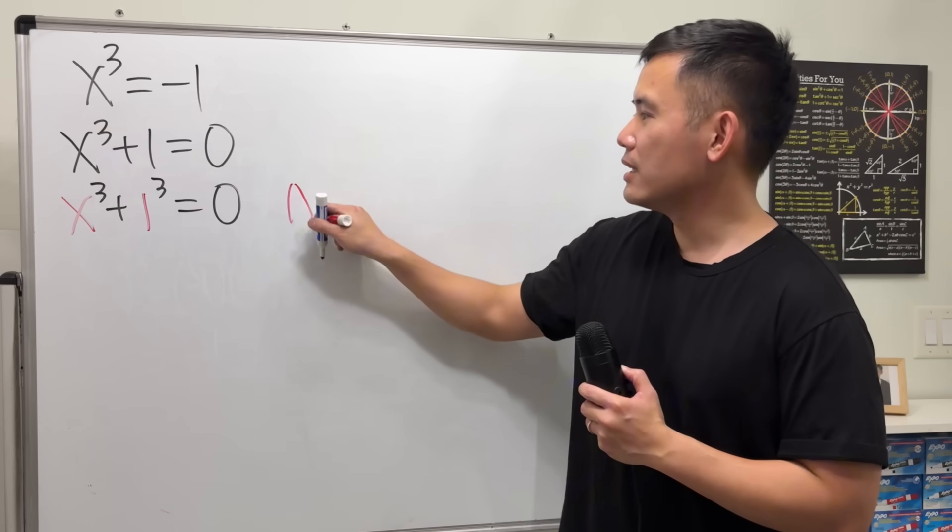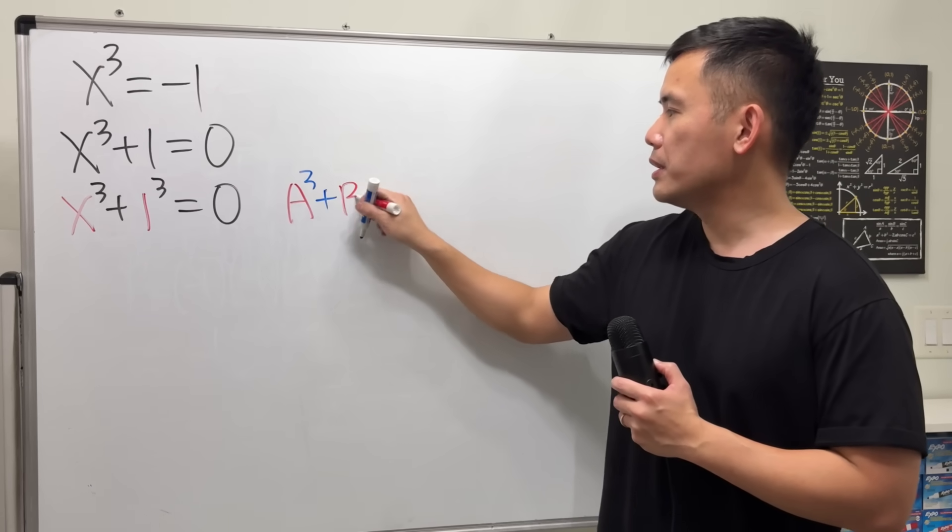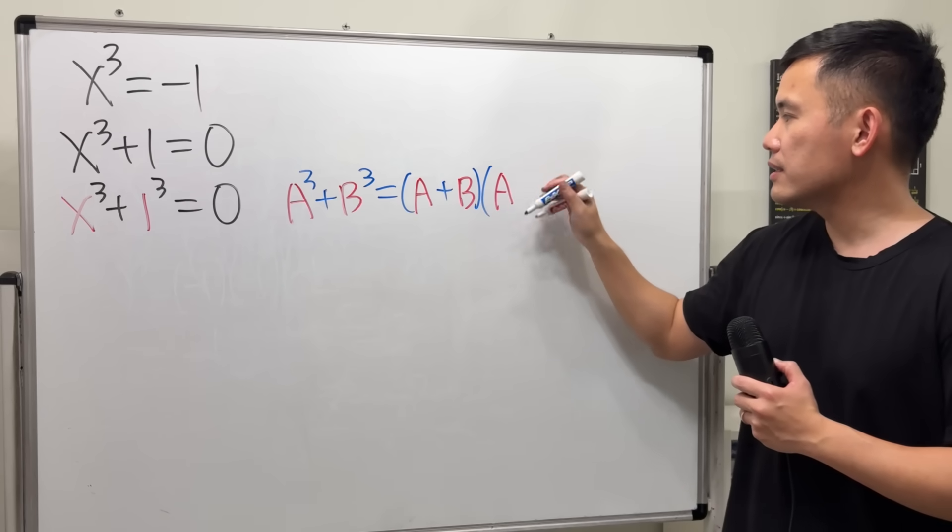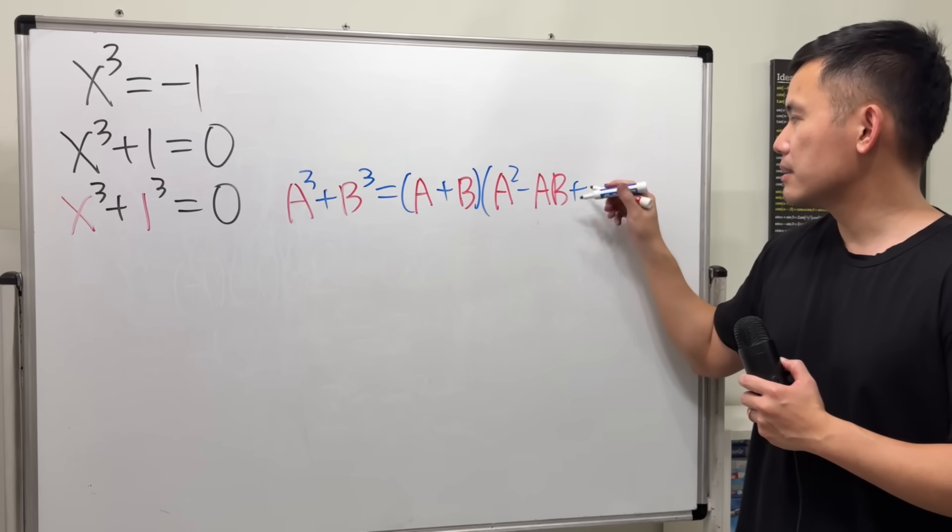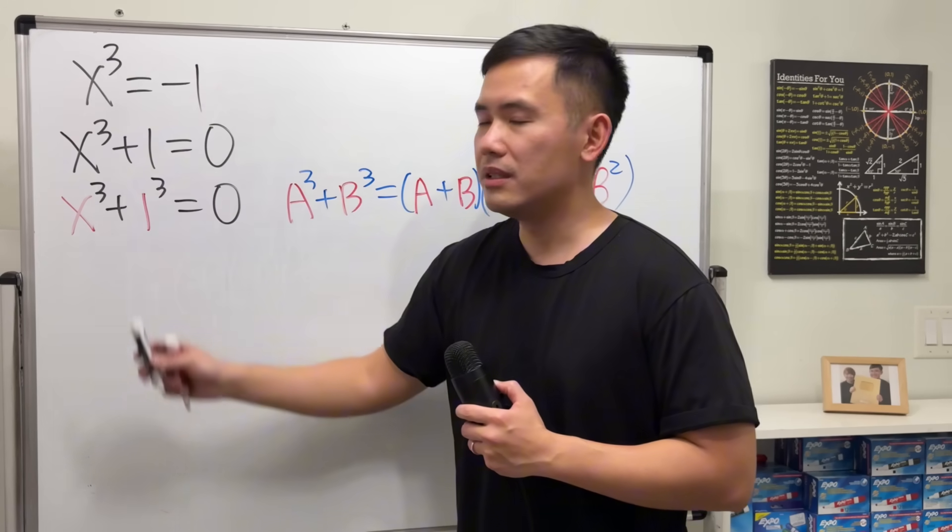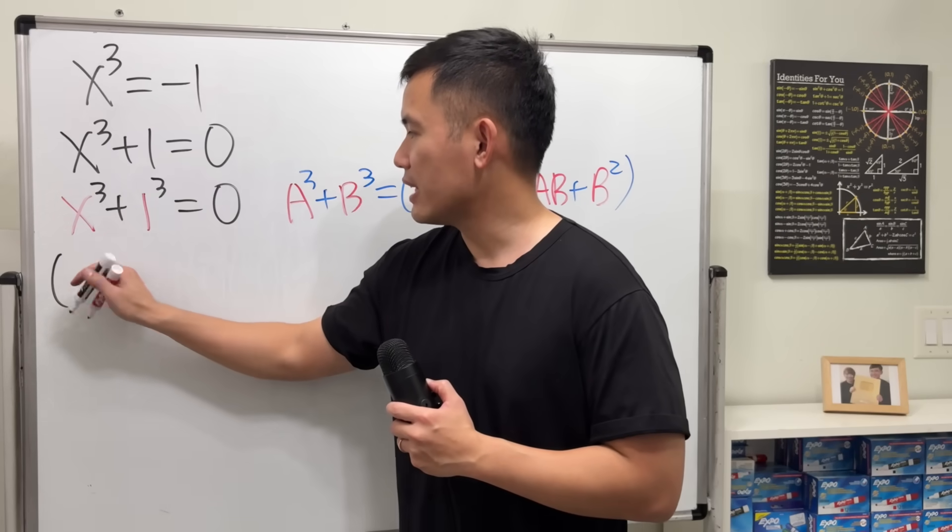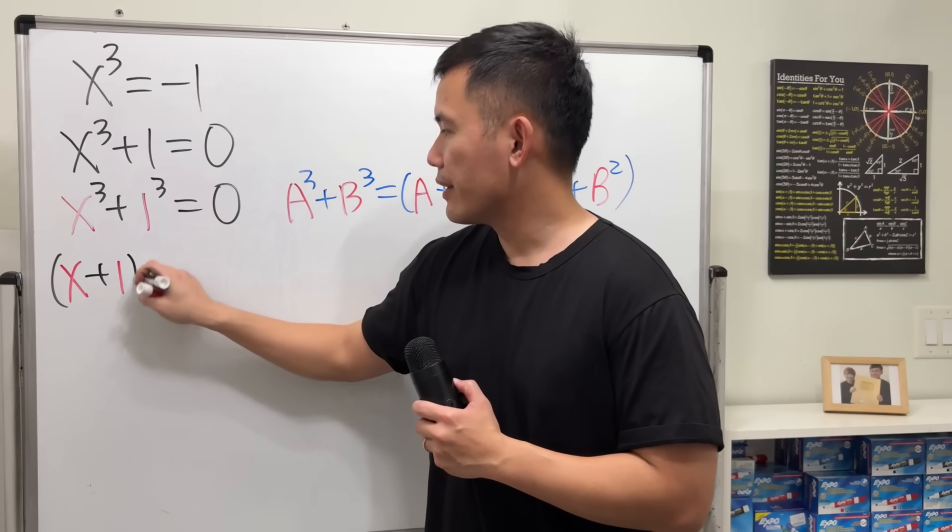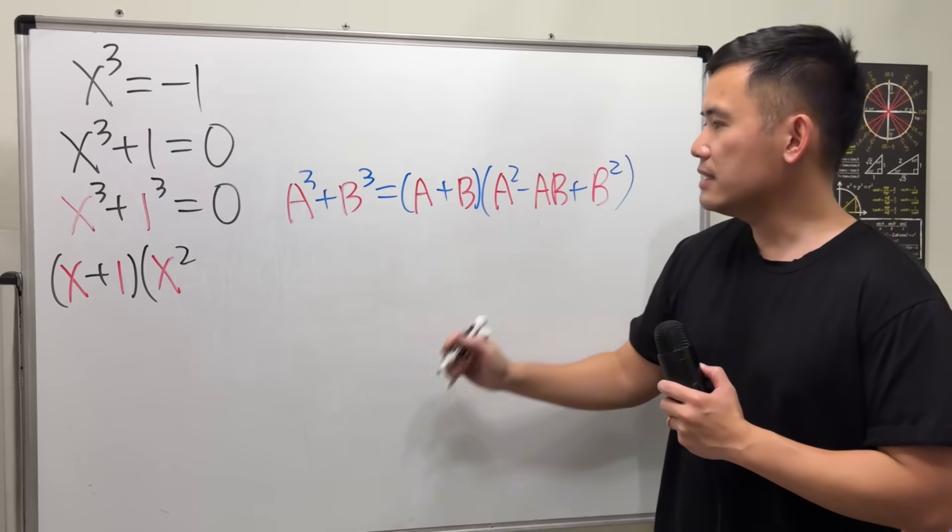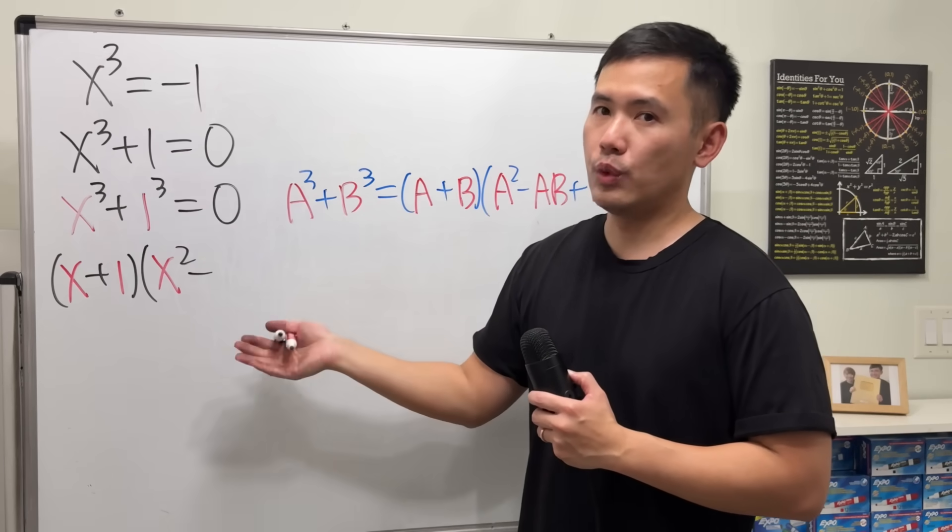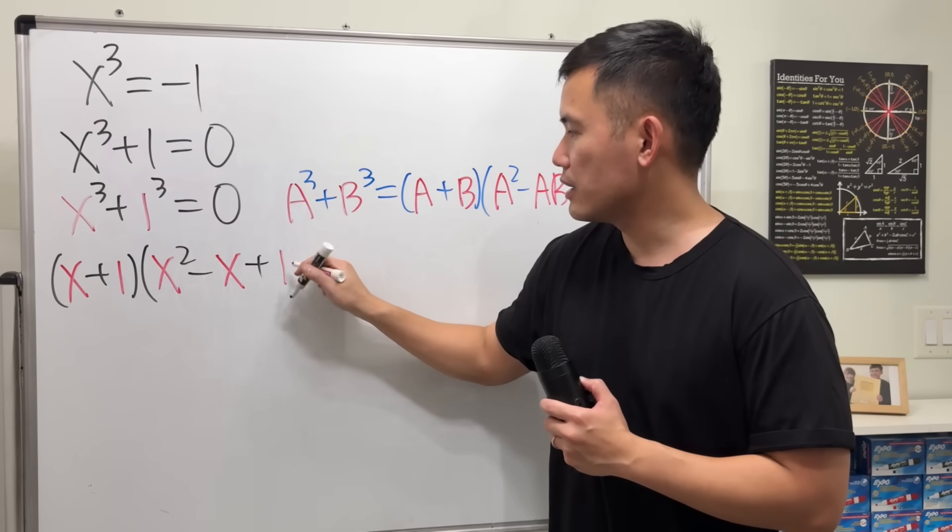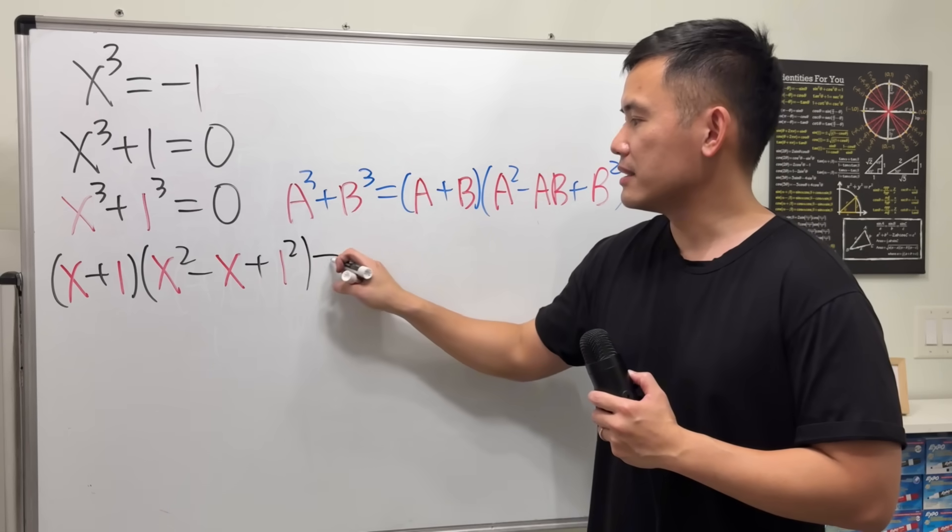And let me just put that down to remind you guys. When we have a cube plus b cube, this is equal to a plus b times a squared minus ab and then plus b squared. Here, our a is the x, the b is 1. Now, applying this formula, we will just get x plus 1, and then continue with the x squared minus ab, x times 1 is just x. And lastly, b squared. 1 squared is just 1. And let me just put that down on purpose like this to show you we are following the formula. And that is equal to 0.